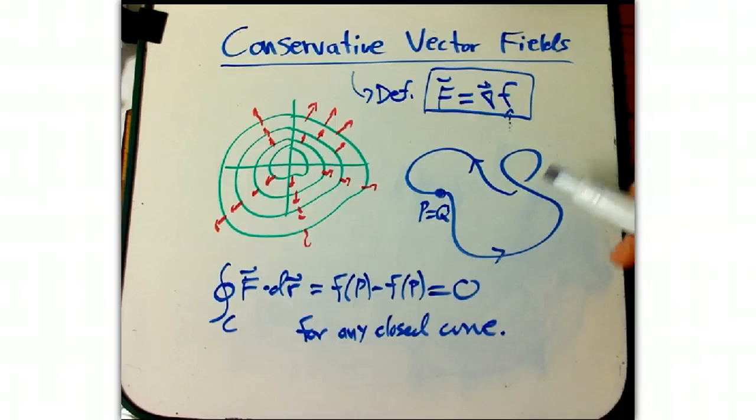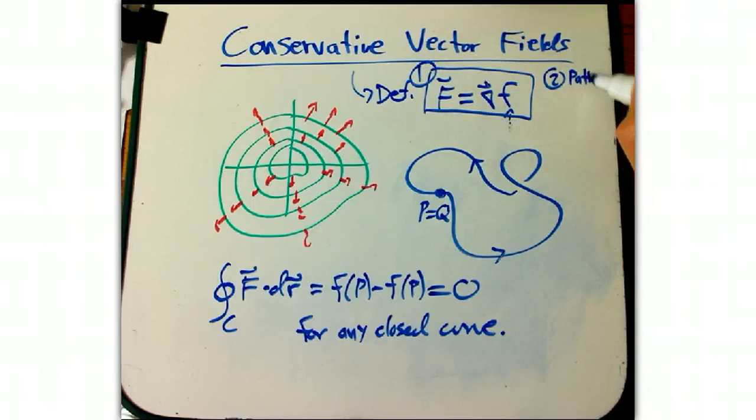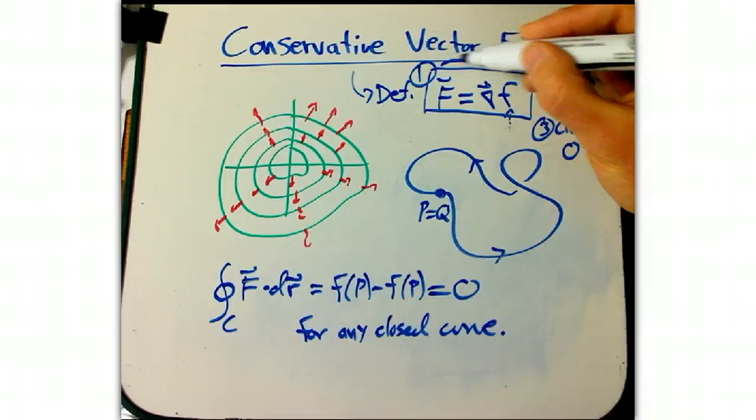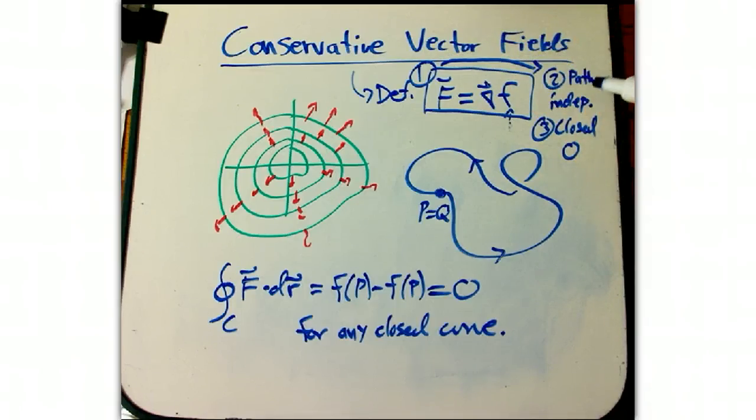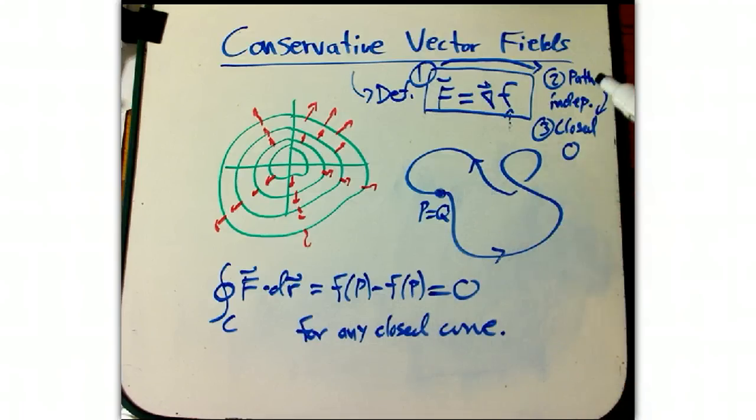So we've got three things now. We've got this, number one. Then we've got two, which is the path independence. And then we've got three, the closed curve giving zero. So far we've seen that one implies two, and two implies three all on its own, because all we really used is two implies three. Here I just showed that one implies three using FTC for line integrals. It's easy to show that two implies three.